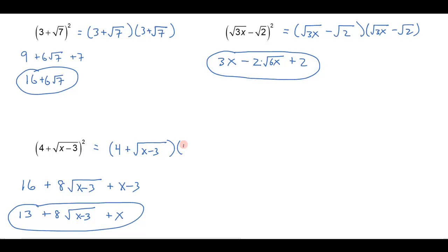Multiplying out longhand to verify: 4 times 4 gives 16, the outers give 4√(x−3) and the inners give another 4√(x−3), totaling 8√(x−3), and √(x−3) times √(x−3) is (x−3). Combining those terms confirms the answer is correct.